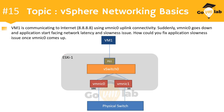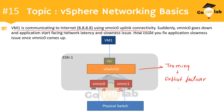Now let's look at the problem statement. In this given scenario, VM1 is communicating to the internet at 8.8.8.8 using VMNIC0 uplink connectivity. VMNIC0 is the active adapter and VMNIC1 is a standby adapter, meaning the virtual switch has been configured in teaming mode with an explicit failover order policy. The packet from the virtual machine is going through the active adapter VMNIC0 and reaching the external server.